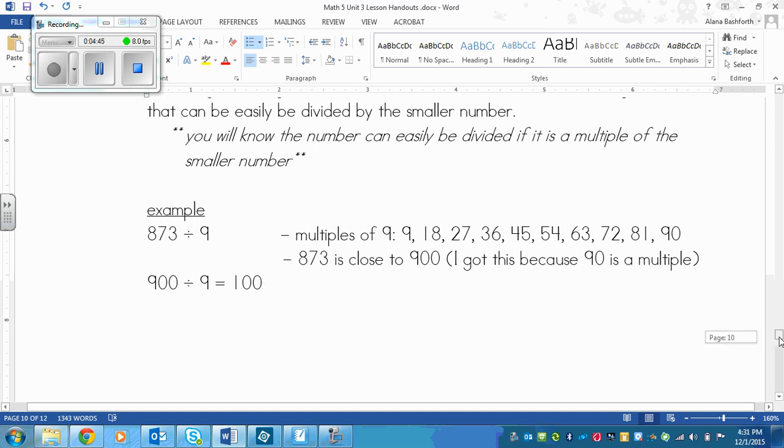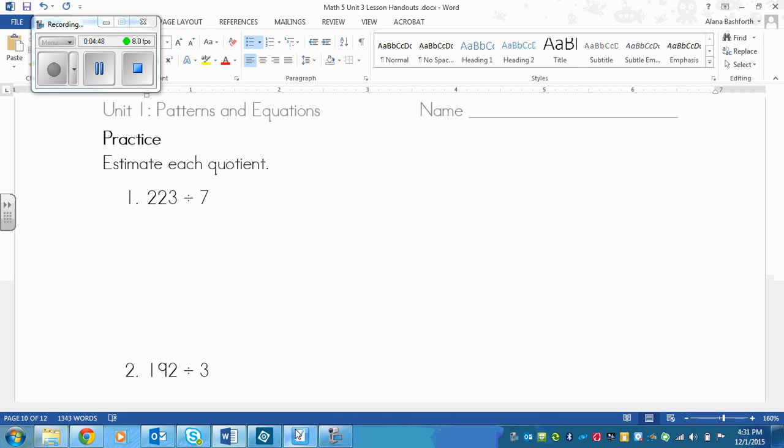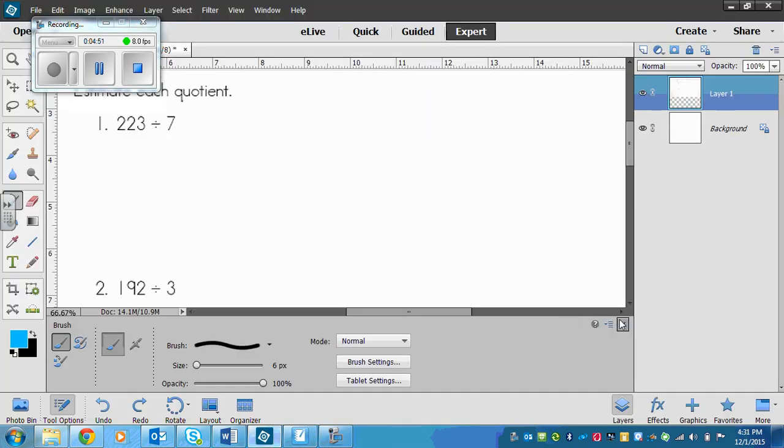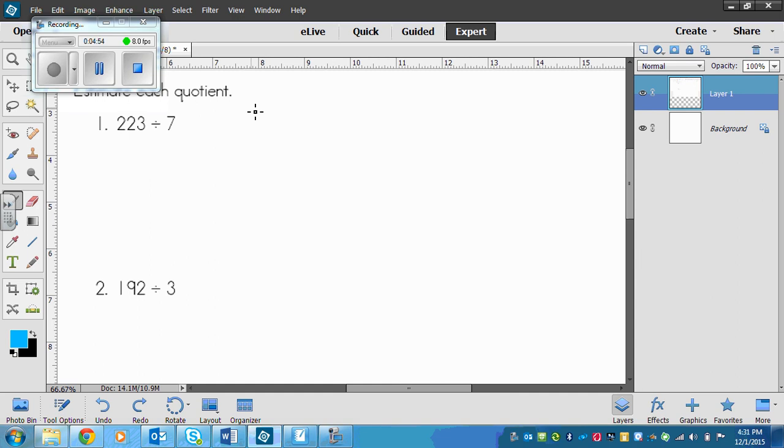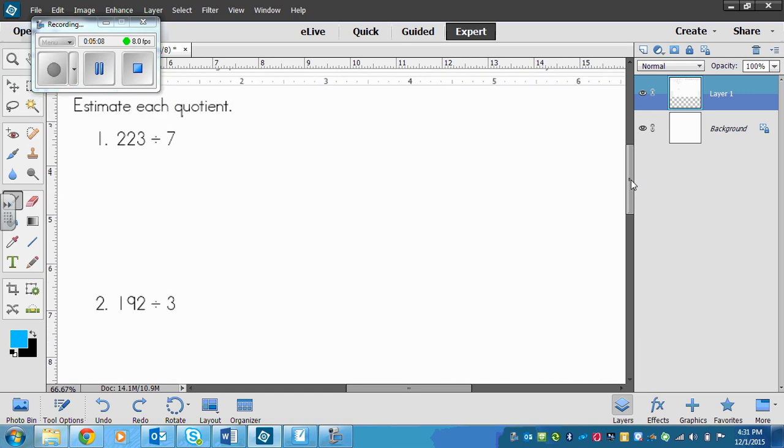Next up is your practice. You've got three here to do: 223 divided by 7, 192 divided by 3, and 315 divided by 8. The easiest way, and I suggest, is doing compatible numbers. So find a multiple of 7 and change the front two numbers to that multiple, change this to a zero. Do that same strategy for the other two. Pause the video and do that, then play again once you're finished.